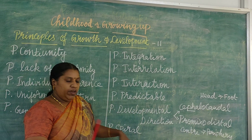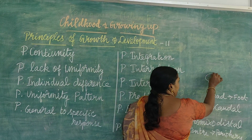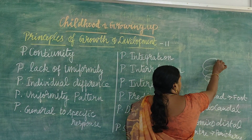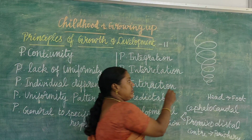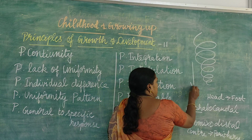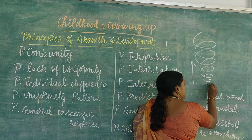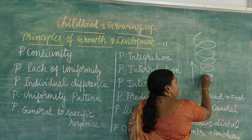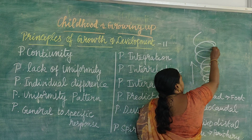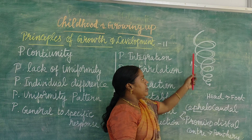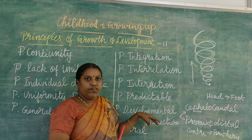Then the principle of spiral development. Spiral means we proceed from a single cell, then multiply. Growth proceeds from a simple initial stage and elaborates progressively. We start from a single initial cell and our growth and development proceeds, becoming more complex. That is the principle of spiral development.